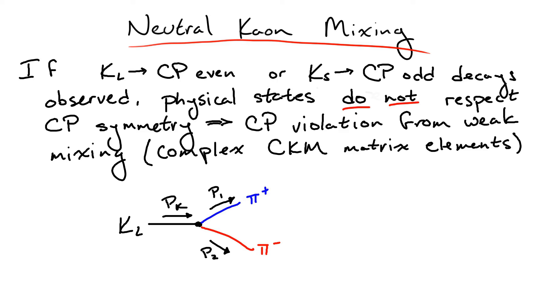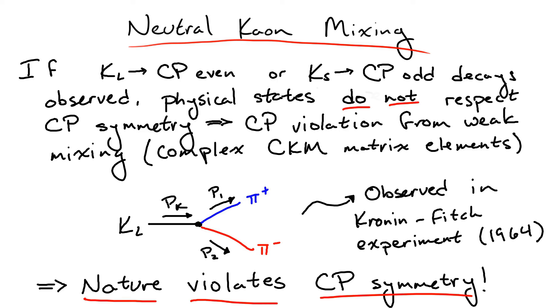The first experiment to look for CP-violating kaon decays was conducted in the mid-1960s by James Cronin and Val Fitch, and anecdotally, they expected to see nothing. However, to their surprise, their experiment observed the K-long decaying into just two pions, thus violating CP and giving the first evidence to a third generation of quarks.